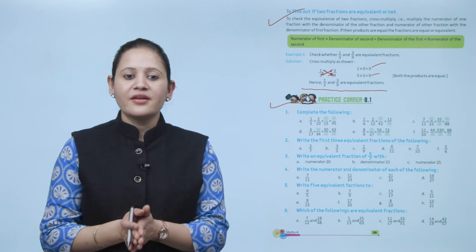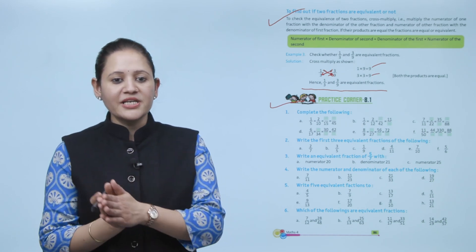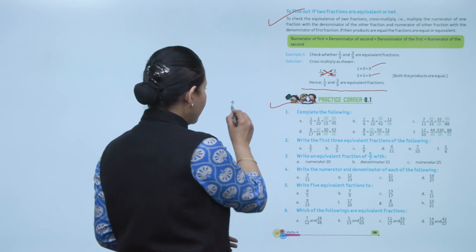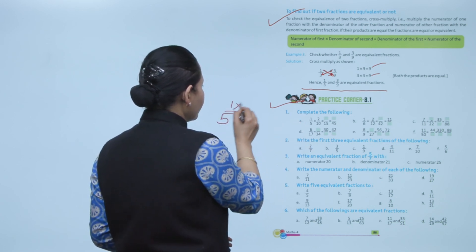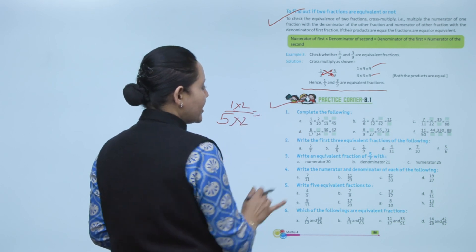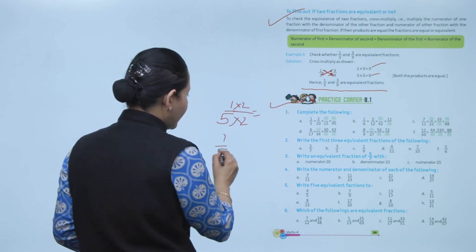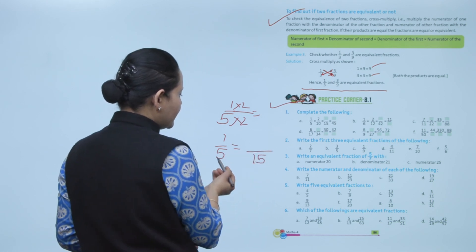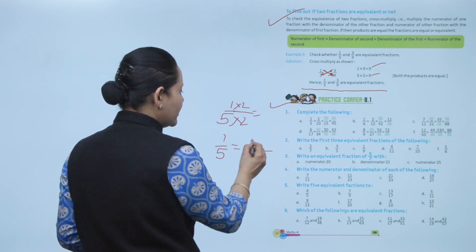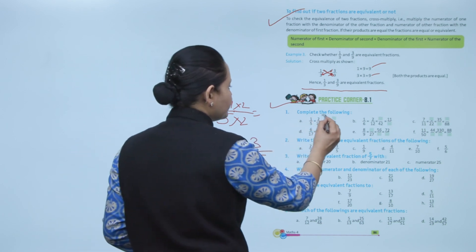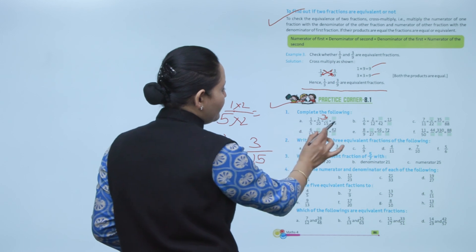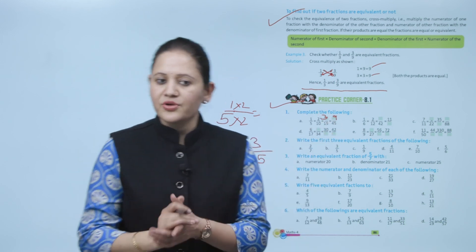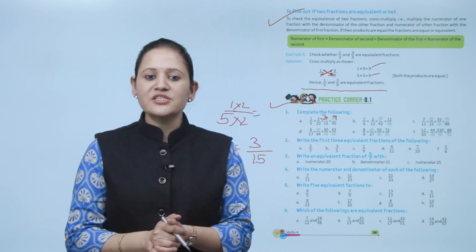Complete the following: 1 by 5 equals 2 by 10. We multiplied both numerator and denominator by 2 to get 2 by 10. For denominator 15, we multiply by 3 to get 3 by 15. Similarly, 1 into 9 gives 9 by 45. Practice all the questions of this exercise.